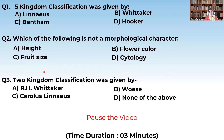Two Kingdom Classification was given by Linnaeus, Rutherford, Hooker, and Bentham. See the questions carefully. Five Kingdom Classification was given by — we have discussed earlier — it was given by Whittaker.